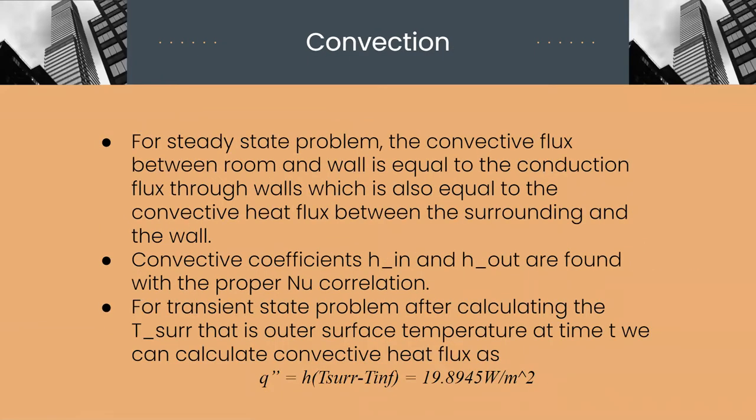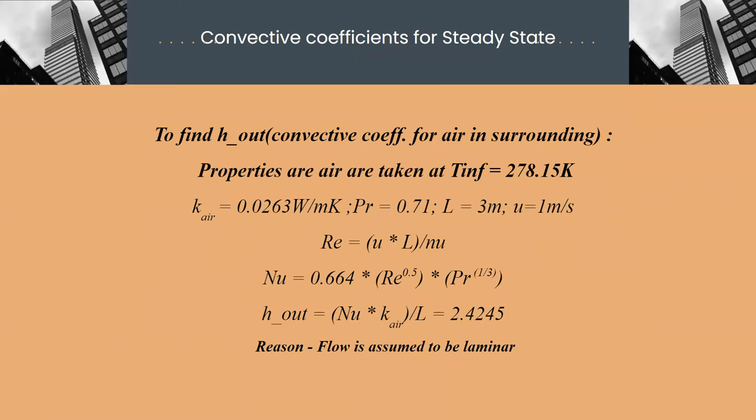Coming to convection, the convective heat flux between room and wall is equal to the conduction flux through walls which is also equal to the convective heat flux between the surrounding and the wall. Convective coefficients h_in and h_out are found with proper Nusselt number correlations. And for transient problem, convective heat flux is calculated at time t by calculating temperature of outer surface. Equation used to calculate heat flux is shown below.